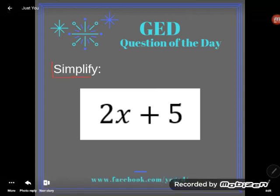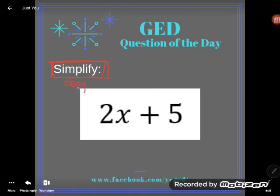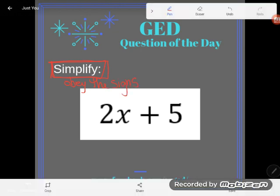Directions say simplify. Really generic word in math that just says perform the indicated operation. So basically obey the signs. If it says plus, plus. If it says multiply, multiply. If it says raise to a power, raise to a power. So that's what simplify means.